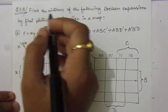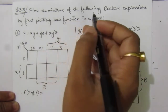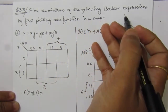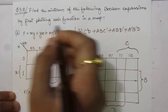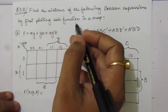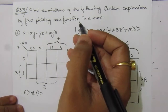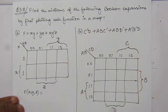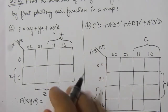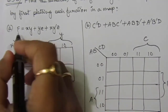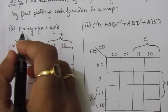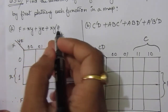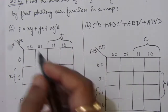The problem is: find the minterms of the following boolean expressions by first plotting the functions in a map — either a three-variable map or four-variable map depending on the expression. The first problem is f equal to xy plus yz plus xy bar z.